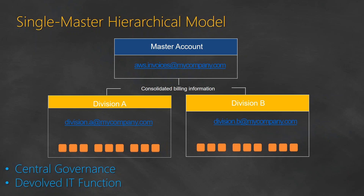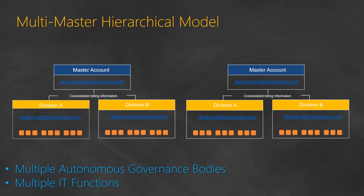This is the single master hierarchy model as AWS calls it. You can also have a multi-master hierarchical model where you have multiple master accounts in your environment, each with multiple accounts under them, and the masters are not connected to each other — the goal is maximum isolation between those masters. The pros of this setup are multiple autonomous governance bodies: some can be HIPAA compliant, some PCI compliant, some ISO compliant, and each can choose the compliance model required by their organization.